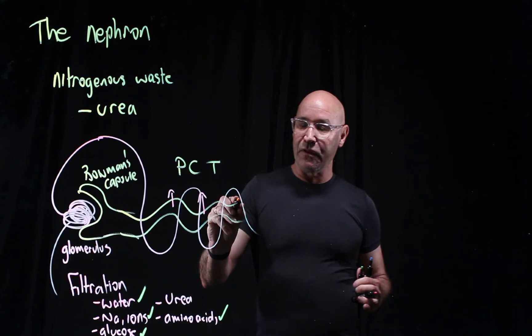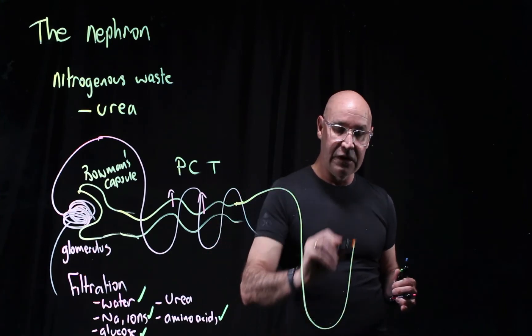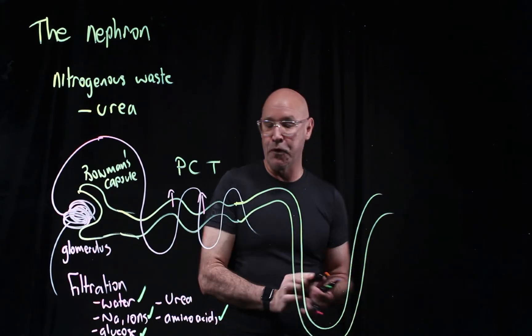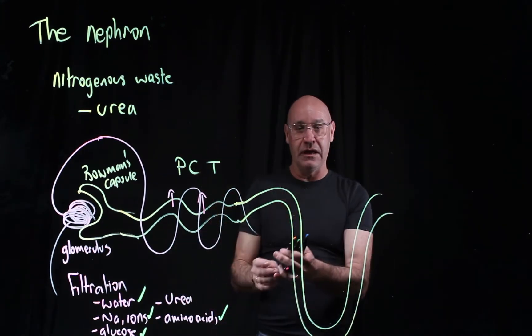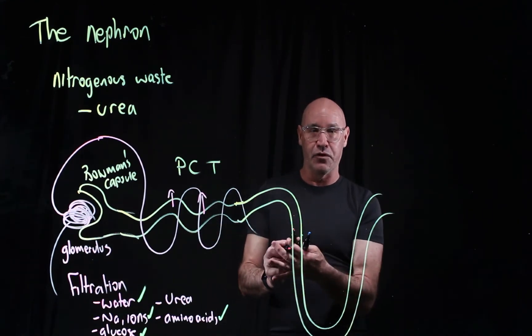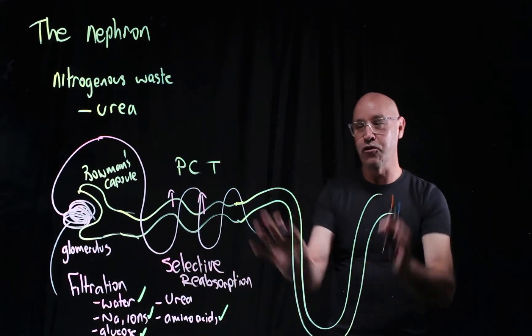Let's talk about the next part. After the proximal convoluted tube, we go into the loop of Henle. The process at the proximal convoluted tube is called selective reabsorption.